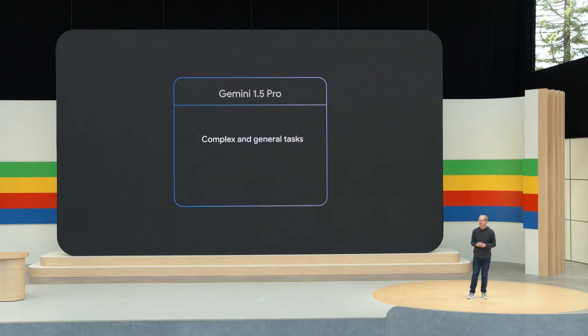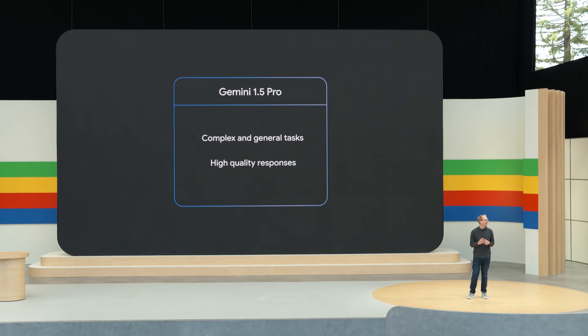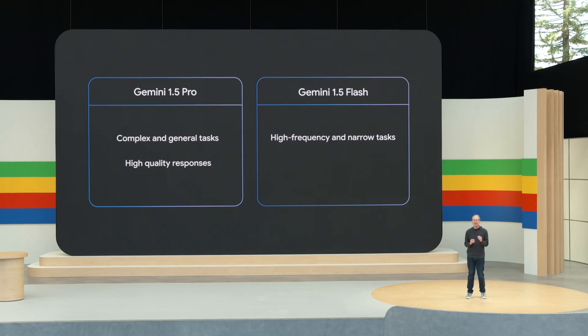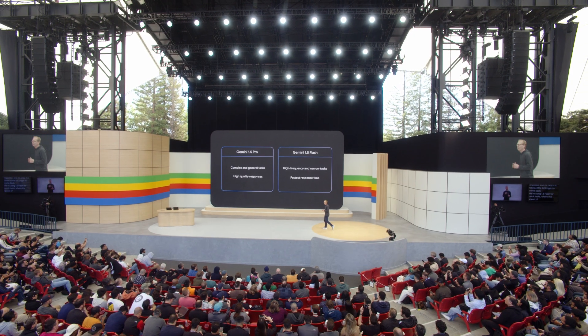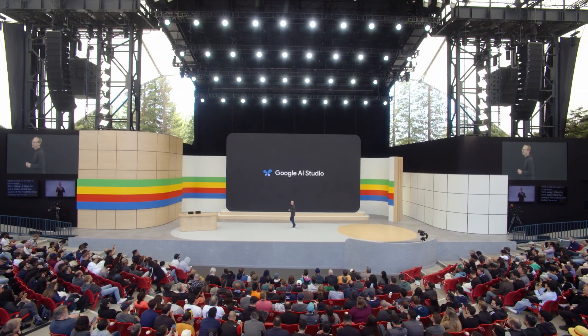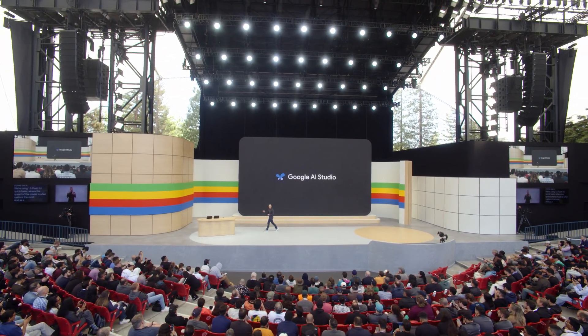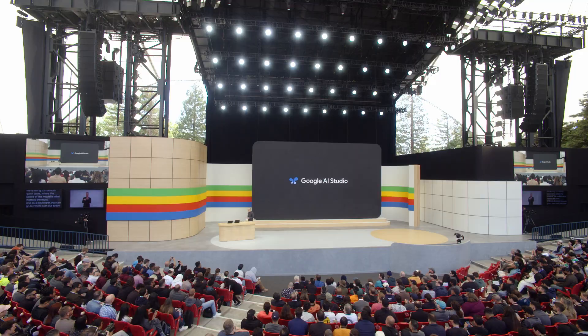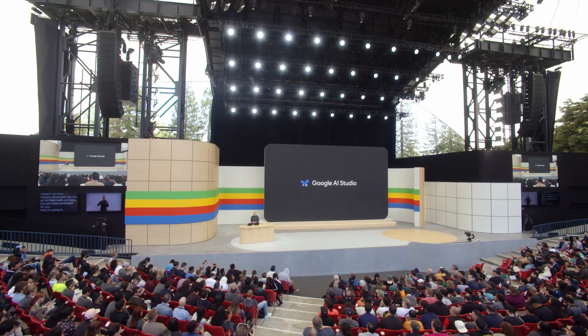One thing you might be wondering is which model is best for your use case. Here's how we've been thinking about it on the team: we use 1.5 Pro for complex tasks where you really want the highest quality response, and it's okay if it takes a little longer to come back. We're using 1.5 Flash for quick tasks where the speed of the model is what matters the most. As a developer, you can go try them both out today and see what works best for you. Now I'm going to show you how it works here in AI Studio, the fastest way to build with Gemini.